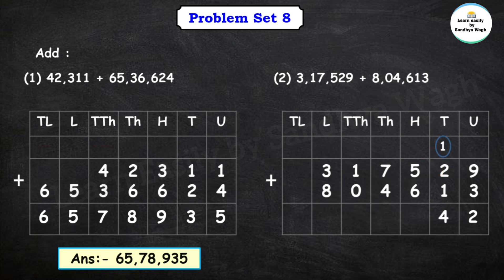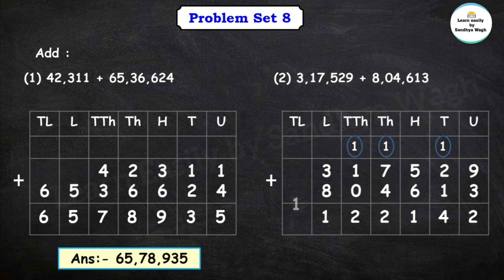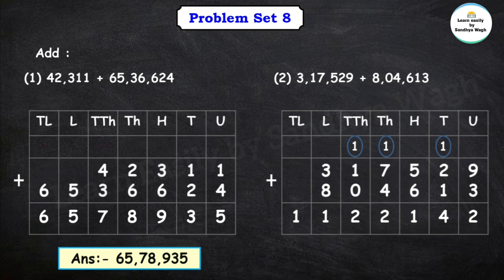2 plus 1 is 3, 3 plus this carried 1 is 4. Then 5 plus 6 is 11, so we write 1 and carry 1 to thousands place. 7 plus 4 is 11, plus the carry gives 12. 1 plus 0 is 1, plus the carryover is 2. 3 plus 8 is 11. So our final answer is 11 lakh 22,142.